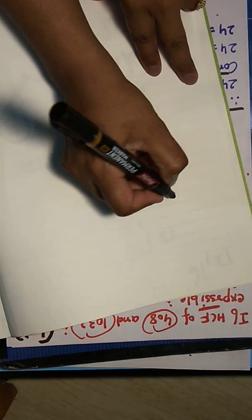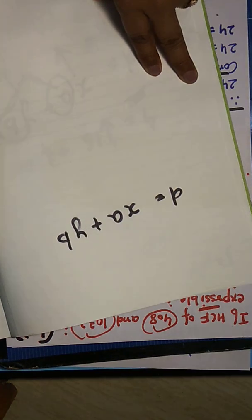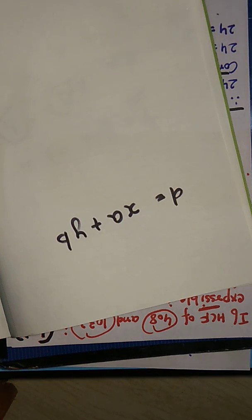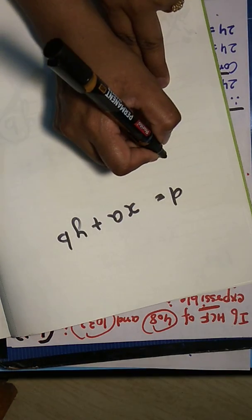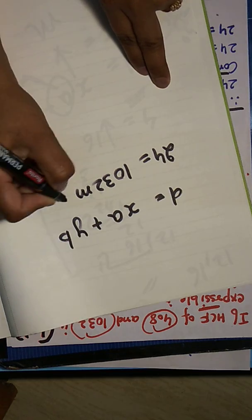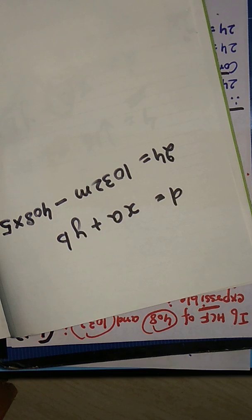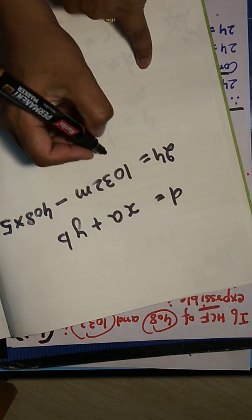Now you have to write this again that 24 equals to 1032M plus 408 into minus 5. Why you have to prove it? It has already been given on top of this statement. Compare this with this.